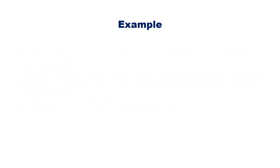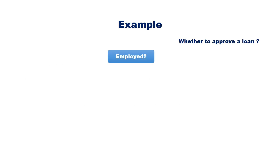Let us see an example. Assume that we want a decision tree to decide whether to approve or reject a loan application. The first test we will make is whether the applicant is employed or not. This is the root node. There are two outcomes, yes and no, so there are two branches for this node.